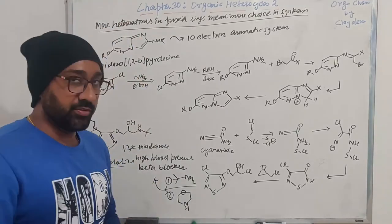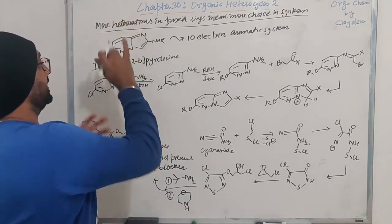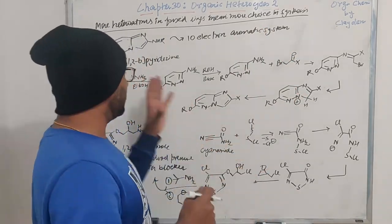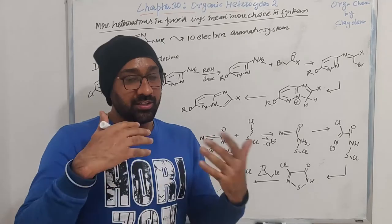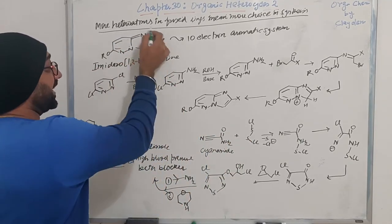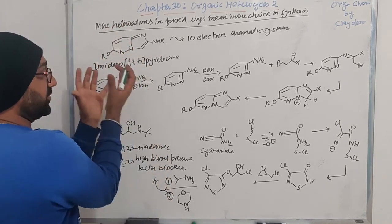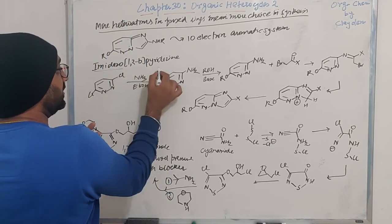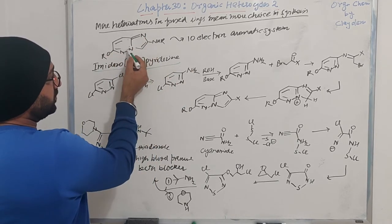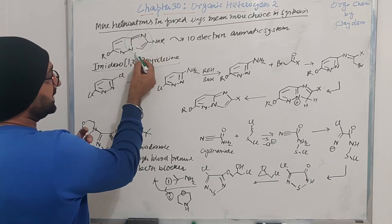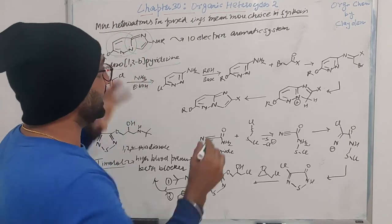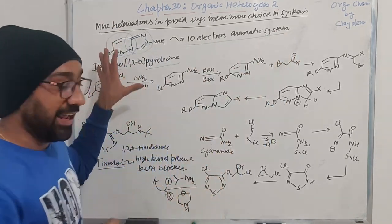We are going to talk about the last part of this chapter, which says: more heteroatoms in the fused ring means more choice in synthesis. The more heteroatoms in the molecule, the more disconnections we can have. Here we are going to talk about this architecture — an imidazopyridazine. It has a pyridazine moiety and an imidazole moiety. This is a 10-electron aromatic system.